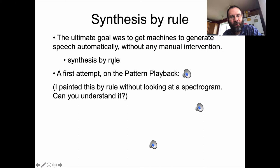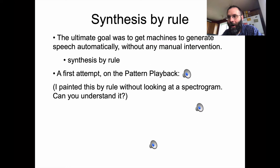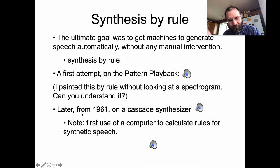The pattern playback was the first synthesis system, and it was the only synthesis system to not modulate F0 as it produced speech, which is why it has that flat monotone. Interestingly, ever since then, when people want to imitate synthetic or robotic speech, they typically use a flat F0. But every successive attempt to create synthetic speech has been able to tweak F0 in some meaningful way. Here's an attempt from 1961 that used a computer to calculate the rules for synthetic speech.